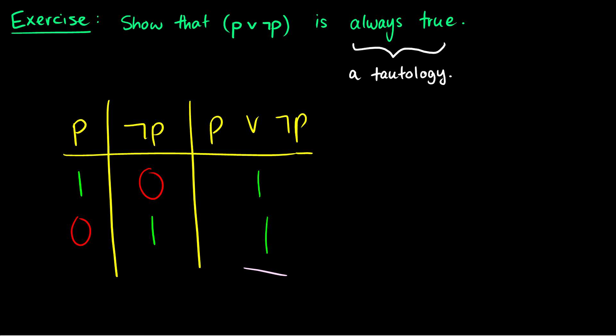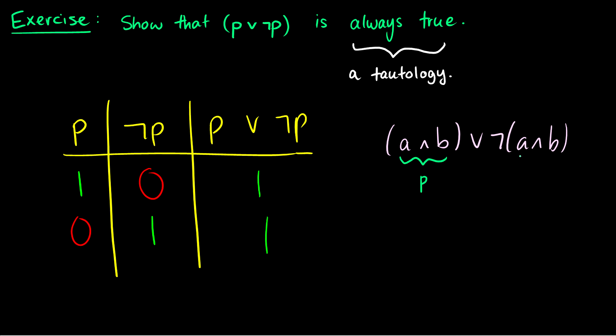P∨¬P could be expressed more elaborately — for instance, something like (A∧B)∨¬(A∧B). This is still just P∨¬P if you treat A∧B as P. So in a proof, P∨¬P might not be expressed with just one proposition; it might be a combination. Recognizing this substitution is an important thing to look out for.